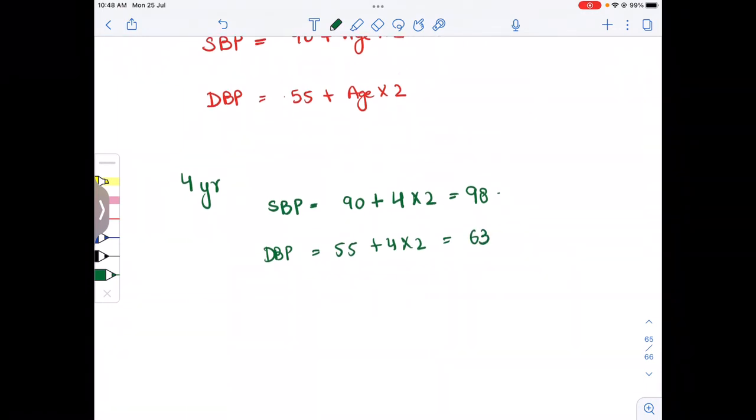So this becomes the child's normal blood pressure, so 98 by 63 mmHg. So this one is a normal blood pressure. I hope you got this video, thank you bye.